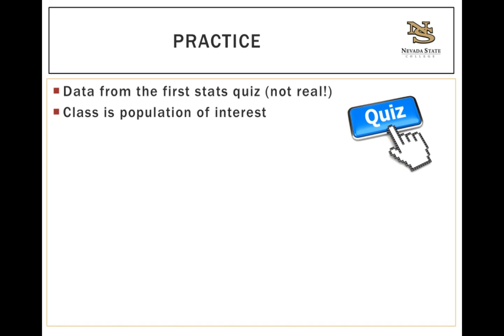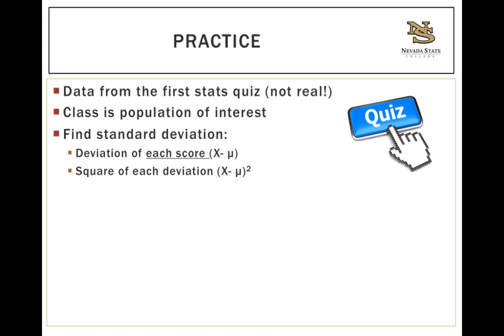If we want to find the standard deviation for the data that we're about to get, you'll want to do all of these things in the following order. First, you're going to find the deviation of each score. This will be x minus μ because we're looking at a population. Then we're going to square each of those deviations, represented by (x - μ)², and then we're going to take all of those squared deviations and sum them up. This is known as our sum of squares, represented by SS.